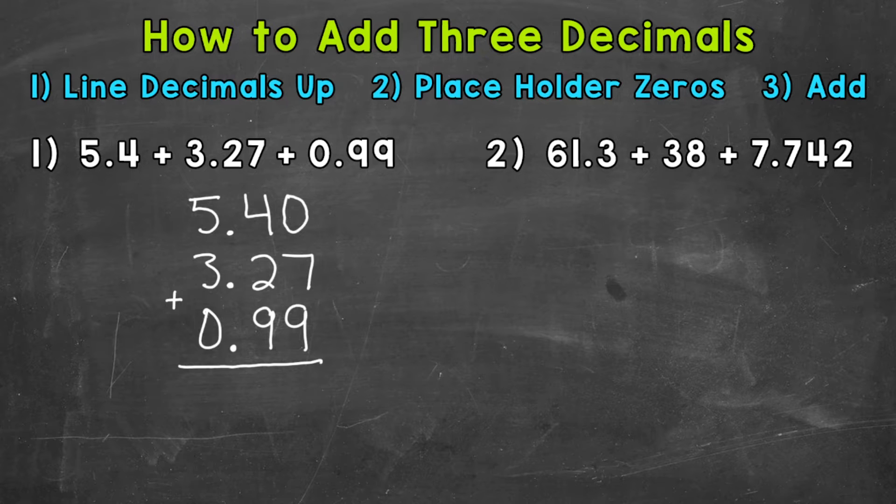Once we have that, we add. So we start by adding the hundredths place. 0 + 7 + 9 is going to give us 16. So regroup or carry the one. Then we add the tenths. 1 + 4 = 5, plus 2 = 7, plus 9 = 16. Now I'm going to bring my decimal straight down into my answer. That decimal should be lined up throughout the entire problem. Now we add the ones. 1 + 5 = 6, plus 3 = 9.